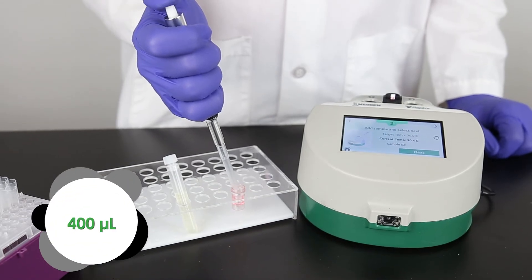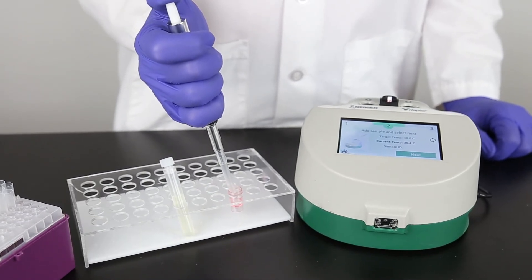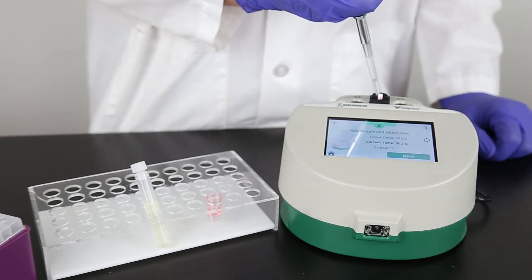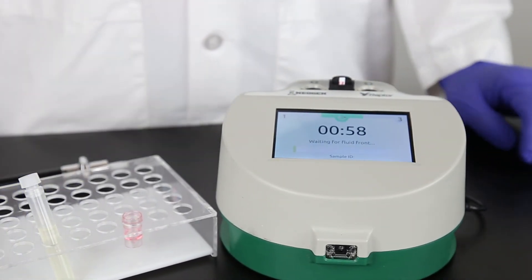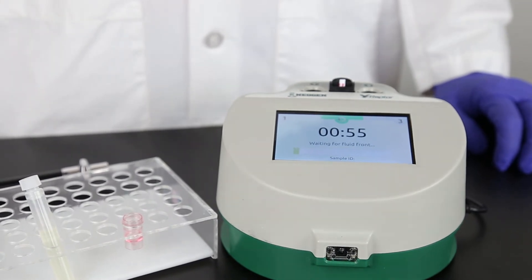Pipette 400 microliters of sample into the Raptor cartridge. The system and timer will start as soon as it detects the fluid front on the sample strip. You can now start samples in the other two ports on the Raptor. Each port operates independently.